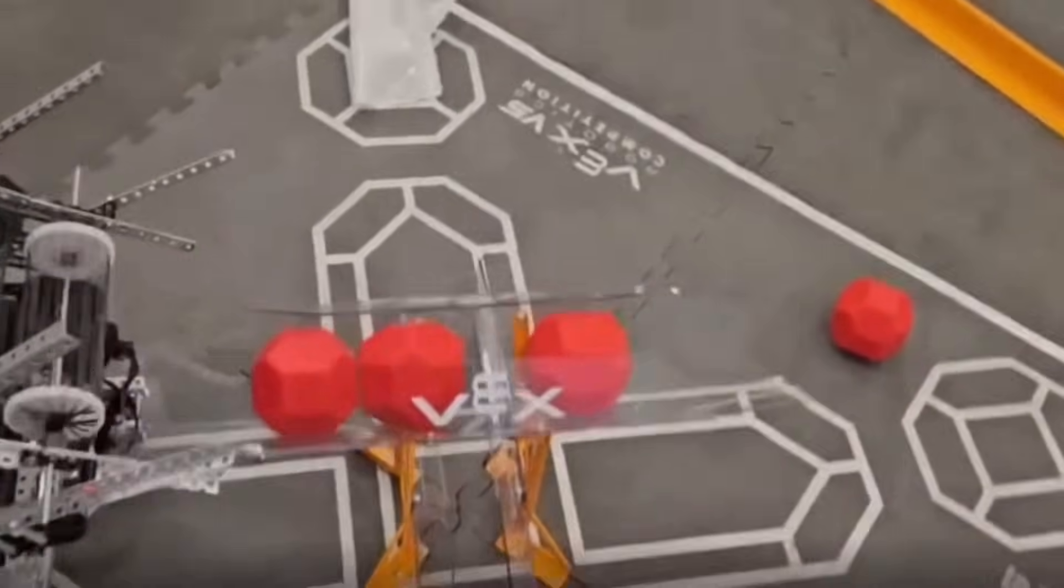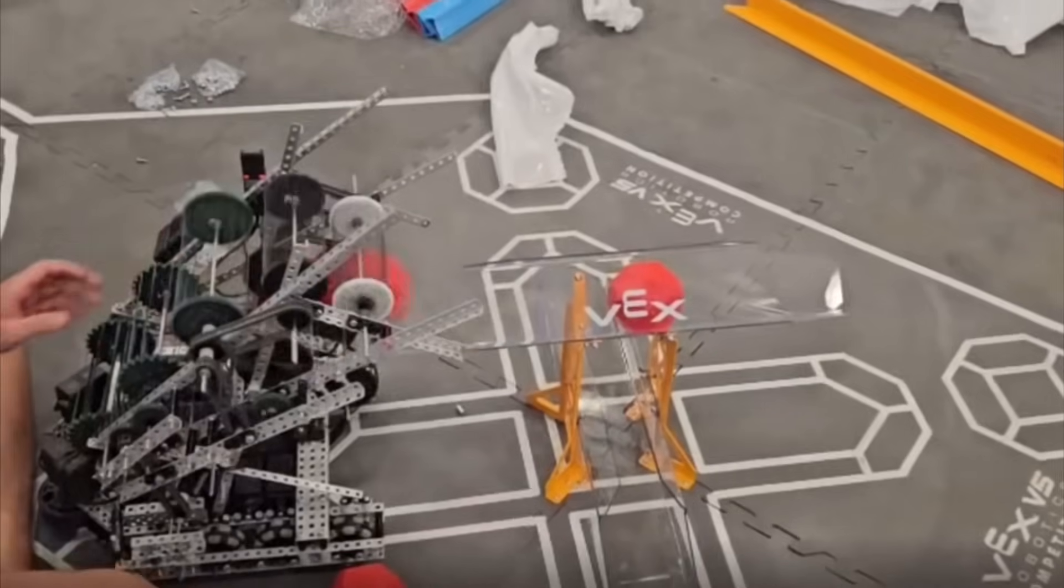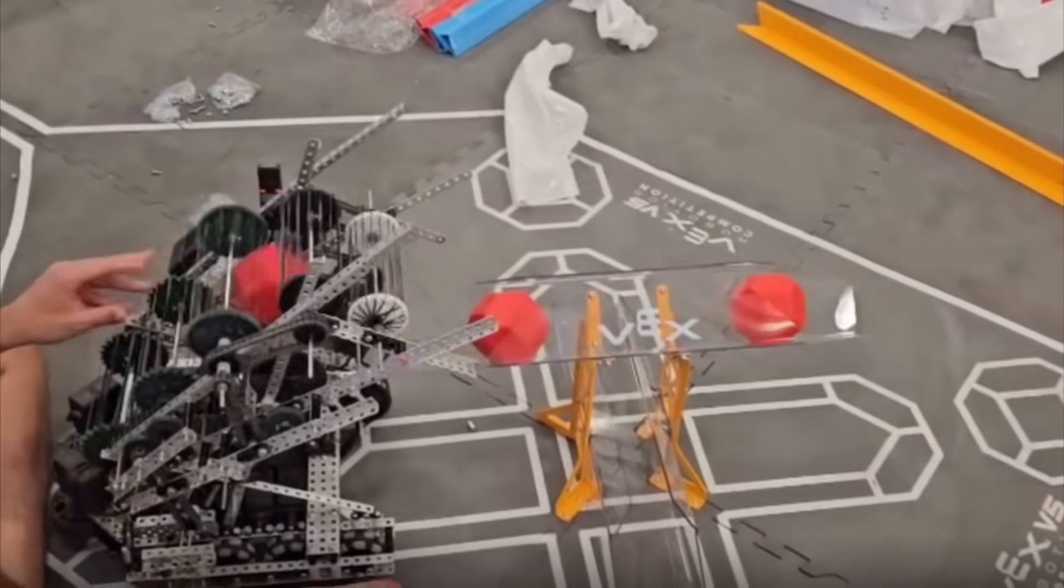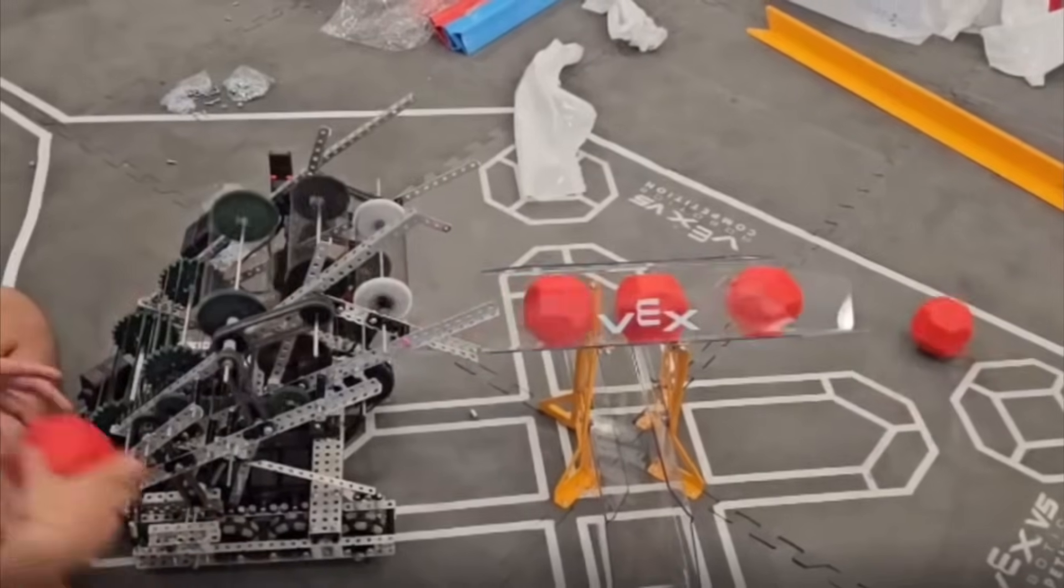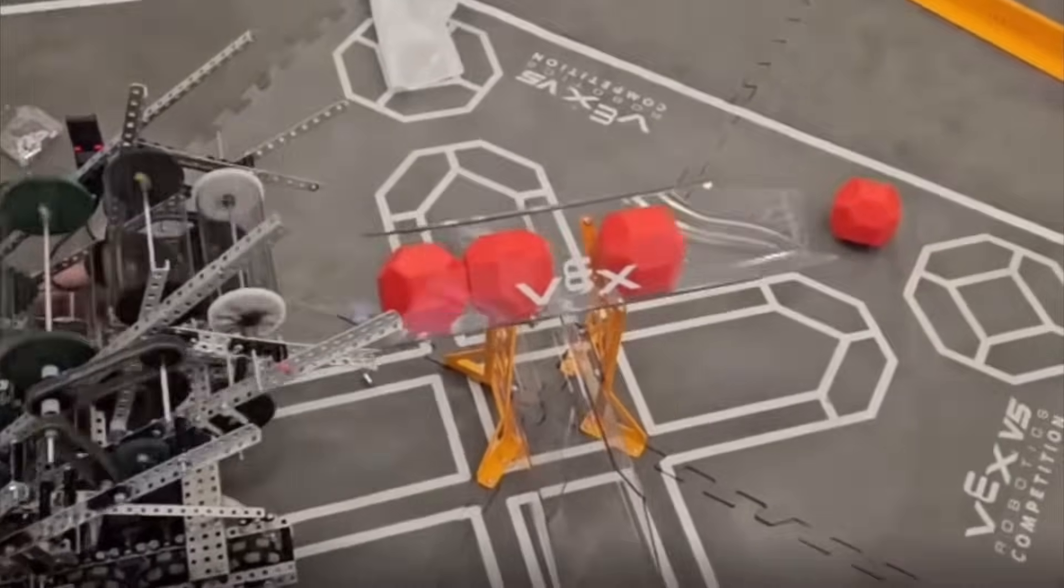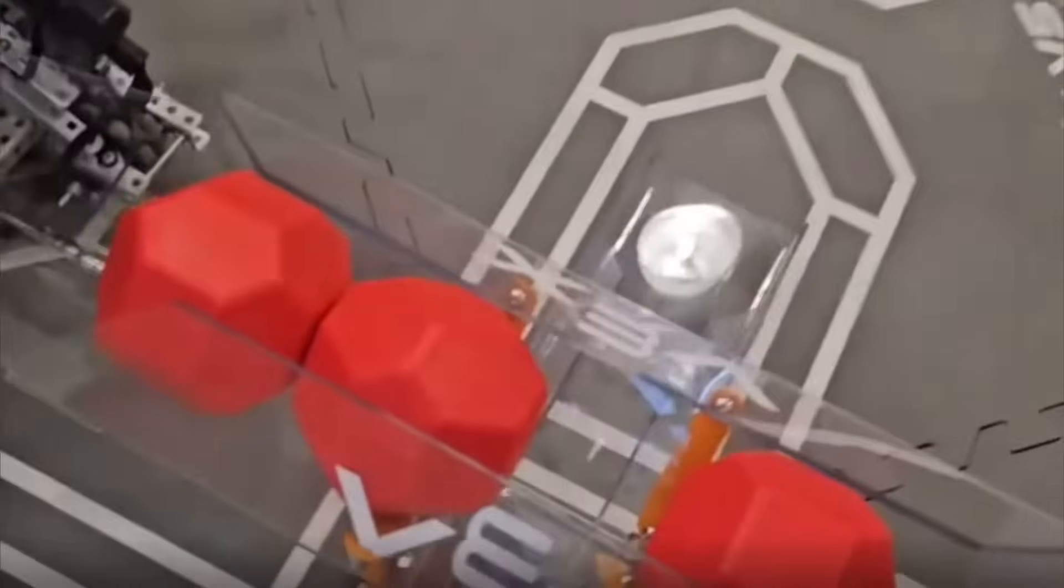So I think that's going to pose an interesting challenge because you have to be able to slow your intake down. And you have to be intake fast, but you also have to be able to slow it down. And so that's going to pose an interesting challenge when we're out there making the robots. You can't just have a super fast intake and score really fast.